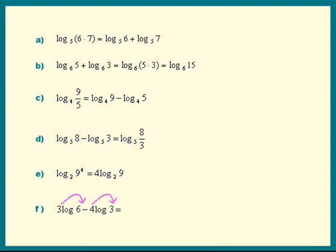Very good, Chipmunk. The 3 goes inside as a power of 6. The 4 goes inside as a power of 3. Keep going. Don't multiply those out. You'll see why. Now we do have a log minus a log. Combine those. We get log of 6 cubed over 3 to the 4th power.